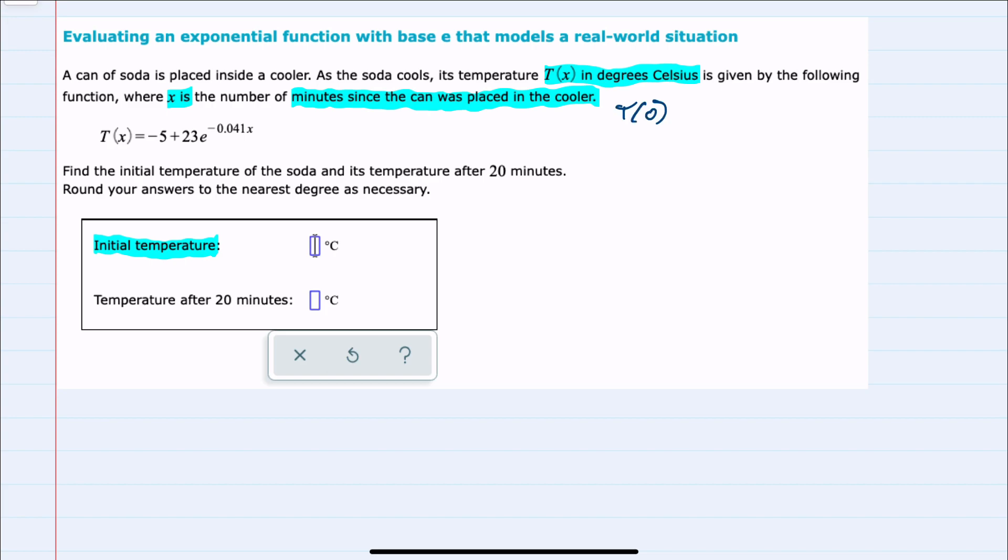To find T of 0, we need to replace the x with 0, giving us that exponent of negative 0.041 times 0. We're going to round that solution to the nearest degree. For x equals 0, I can do this calculation without a calculator because the exponent that e is being raised to is 0.